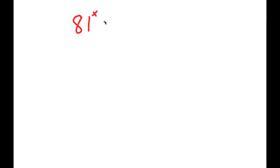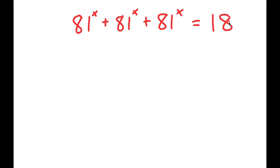So in this problem, I have 81 to the power of x plus 81 to the power of x plus 81 to the power of x is equal to 18. To solve this, from my left hand side, I'm going to start by factoring out 81 to the power of x.